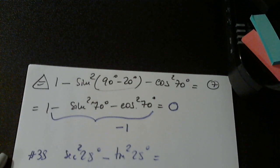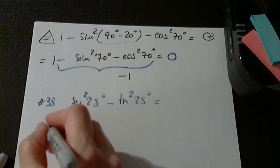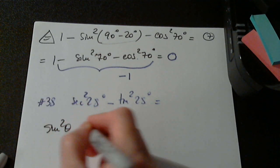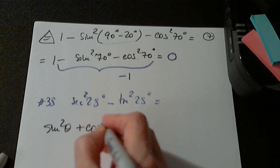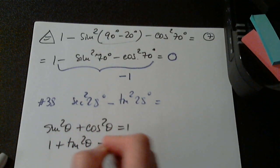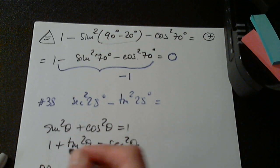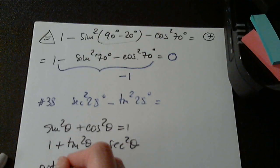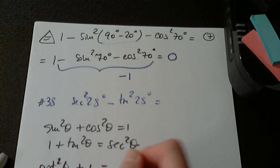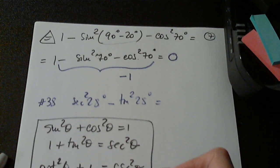Remember those three identities. I'm going to write them again. Sine squared theta plus cosine squared theta equals 1. 1 plus tangent squared theta equals secant squared theta. Cotangent squared theta plus 1 equals cosecant squared theta. These should be in the back of your mind all the time.